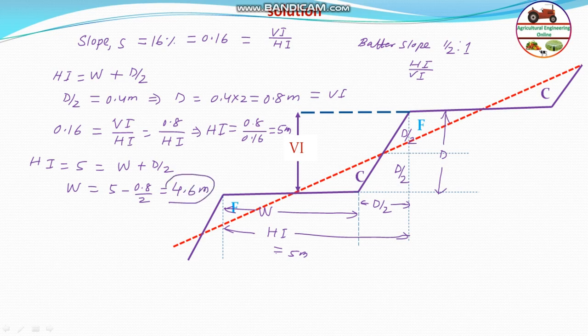Therefore, this is the width of the terrace, that is 4.6 meter. Looking at the options, option B has 4.6 meter as the width of the terrace, so the answer should be B.